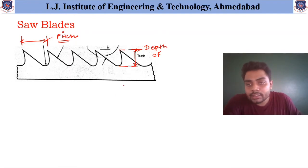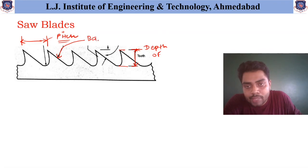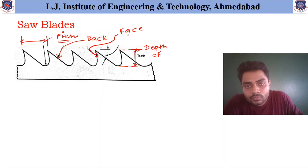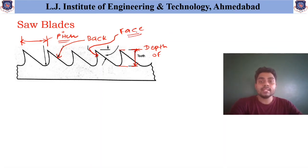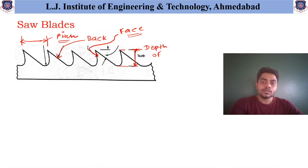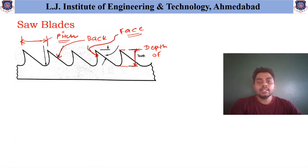The next important parameter you can see over here is the portion of the tooth called the back. Similarly, as you can see, this part is the front face. This face is the main bearing element in the saw blade because this face directly comes into contact with the chips removed during the machining operation. As the chip is removed, it directly impacts on the face, and the face needs to be a strong bearing element — if it cannot sustain the load imparted by the chips formed, then it may result in the failure of that particular tooth.